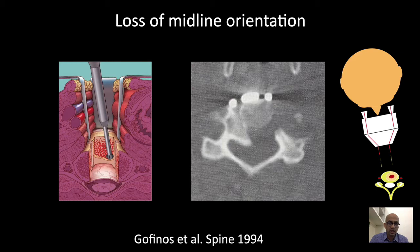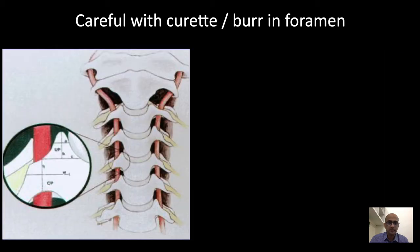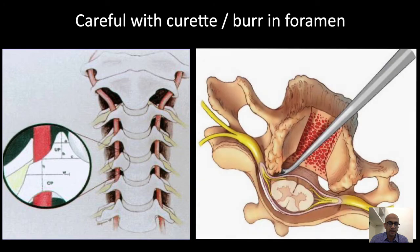The most common mistake in an anterior approach that can lead to vertebral artery injury is the loss of midline orientation, where the surgeon keeps digging far to the opposite side from where he or she is standing. This should be avoided at all costs, even if there are no medial loops. Also, one has to be careful while doing an anterior uncoforaminotomy. The vertebral artery is about 5 mm lateral to the lateral aspect of the disc. In patients with severe uncus hypertrophy, the dissection can lead right up to the VA, so one has to be careful using a curette or burr in the foramen.